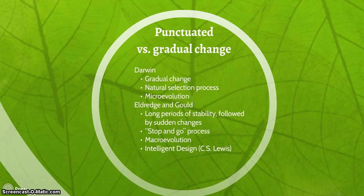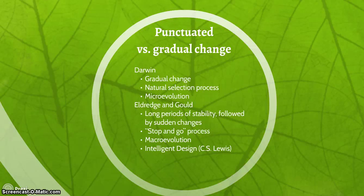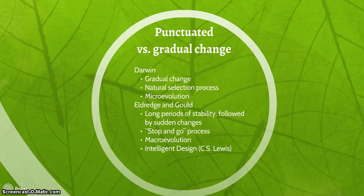There are several different theories of evolutionary change. Darwin's theory is a theory of gradual change, in which the natural selection process over many millions of years gradually, through random mutation, produces evolution. A couple of theorists named Elbridge and Gold theorized long periods of stability followed by, or punctuated by, sudden changes — more of a stop-and-go process. For example, the possibility of a meteorite hitting the Earth may have led to the elimination of the dinosaurs. This is a view of macroevolution, and in some ways it gives some support to the idea of intelligent design, as argued by people such as C.S. Lewis.